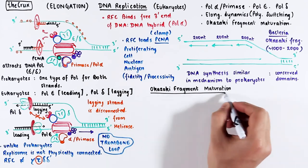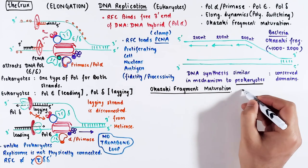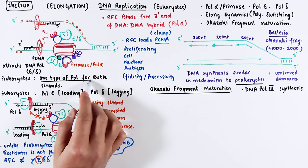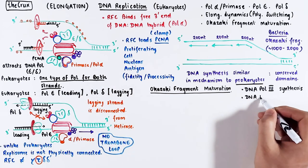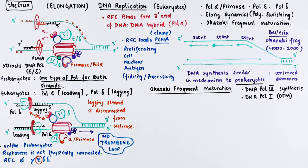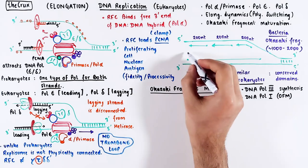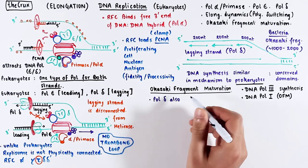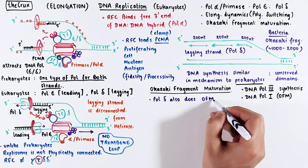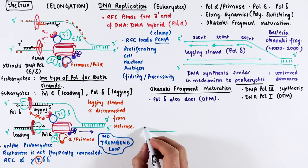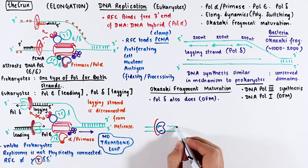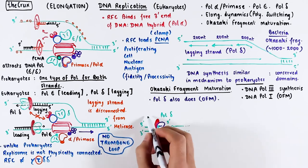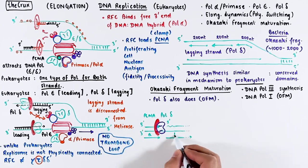Let's talk about okazaki fragment maturation before we end this video. In prokaryotes, both leading and lagging strands were made by DNA polymerase 3 and DNA polymerase 1 then came in to perform the okazaki fragment maturation. In case of eukaryotes, the lagging strand is synthesized by polymerase delta. And polymerase delta also performs the final okazaki fragment maturation. A new polymerase is not needed. Now let's quickly go over this process.